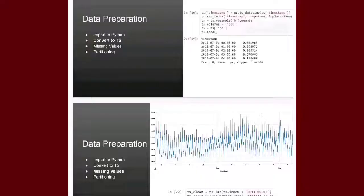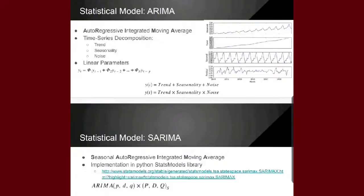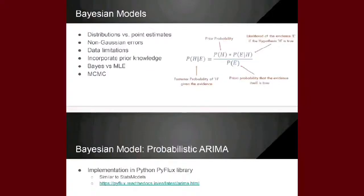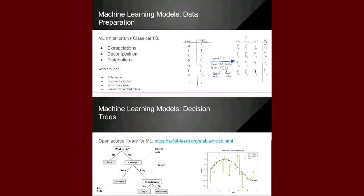A time series is a series of data points indexed, listed, or graphed in time order. Most commonly, a time series is a sequence taken at successive equally spaced points in time. Forecasting financial time series using past observations has been a significant topic of interest for obvious reasons.